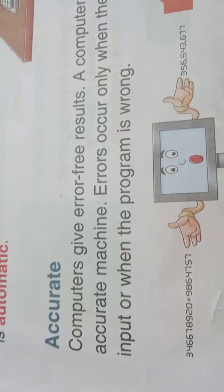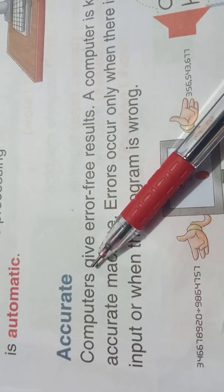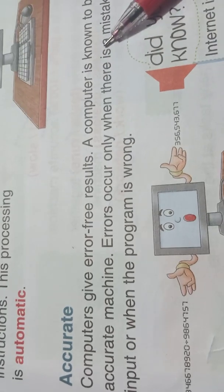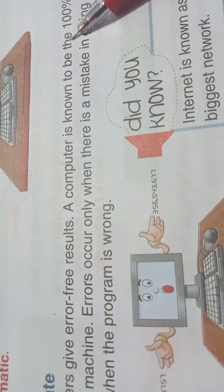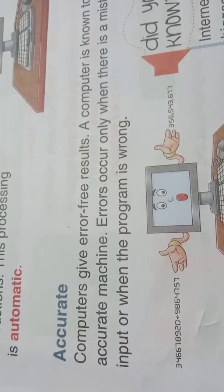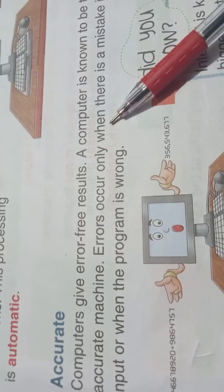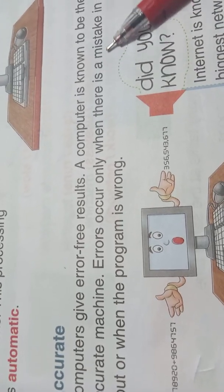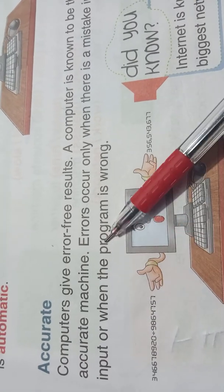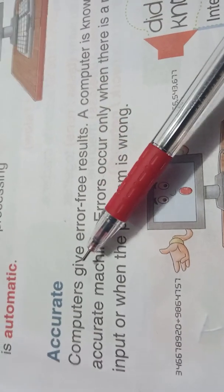The next feature is accurate. A computer gives error-free results. A computer is known to be a 100% accurate machine. Errors occur only when there is a mistake in giving input or when the program is wrong. Accurate means correct.